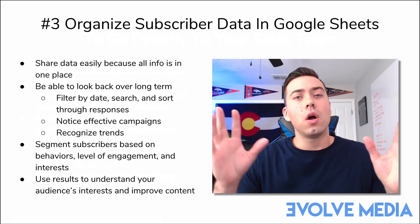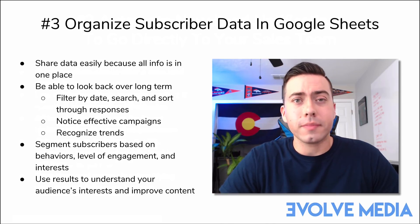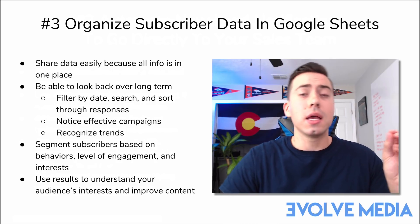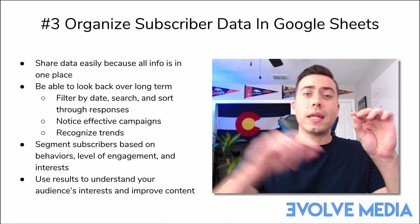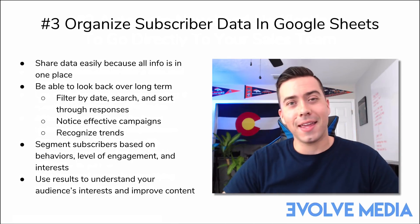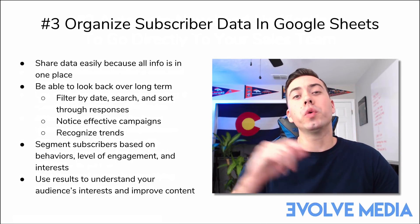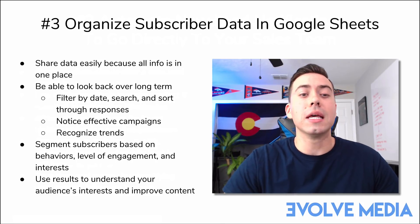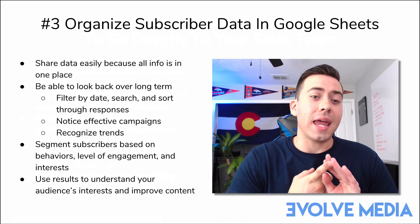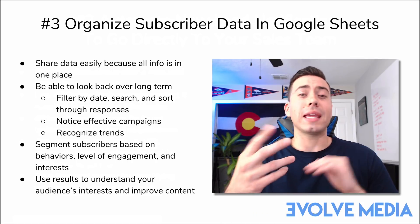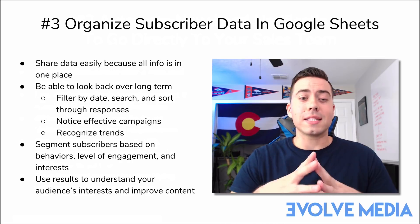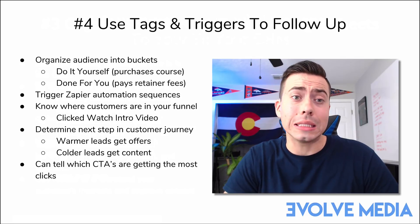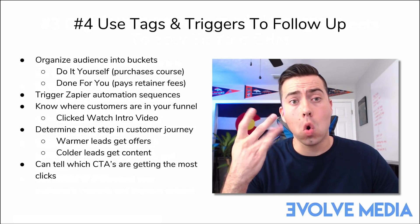You can easily set this up by connecting ManyChat, going into Zapier, and creating a Google Sheet zap — it creates a new row inside your Google Sheet. You can segment your subscribers based on behaviors, level of engagement, and interest, and organize everything inside your Google Sheet exactly how you want it.